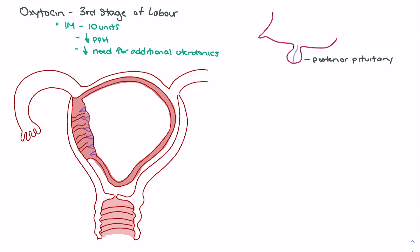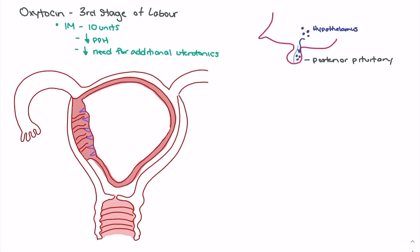When looking at the creation and release of oxytocin, we look at two areas of the brain. First, oxytocin is created in the hypothalamus. The oxytocin created in the hypothalamus will travel via the blood supply down to the posterior pituitary gland, and this is where oxytocin is released from.